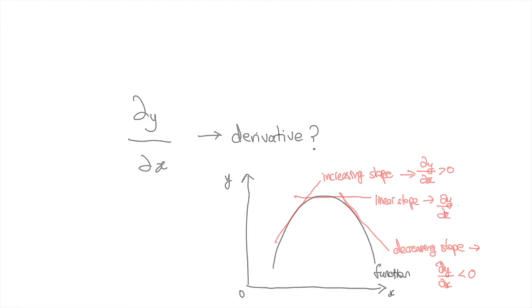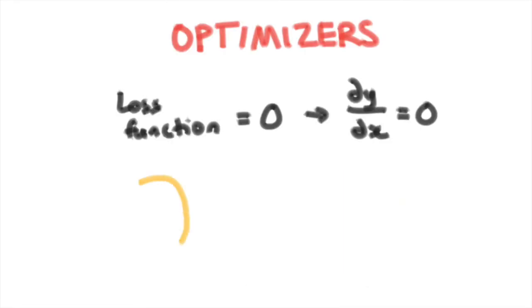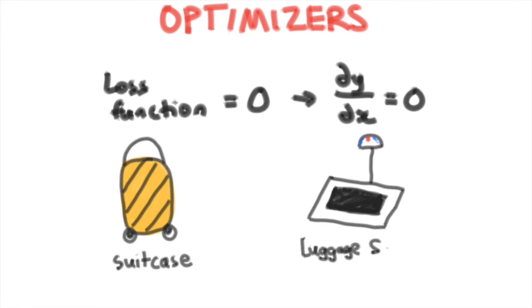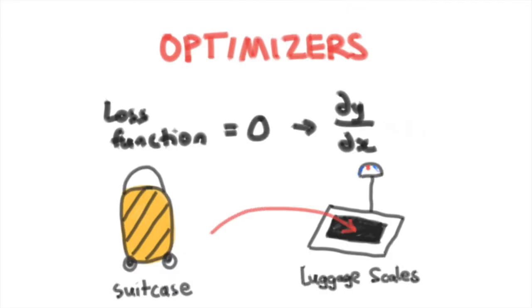In the context of our baggage problem, let's imagine our suitcase is the loss function and the scale is the derivative of the loss function. Now if we place our suitcase on the scales—i.e., take the derivative of the function—we may find that it is currently underweight, meaning the derivative is negative. This means we can still add more items to our suitcase. In other words, we still have room to increase the weight of our suitcase until it reaches the optimal weight, the weight limit designated by the airline. Similarly, if our function is increasing—that is, the derivative of our loss function is positive—we will need to decrease the weight to reach our optimal value of zero loss.